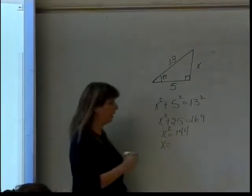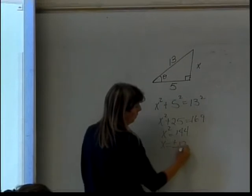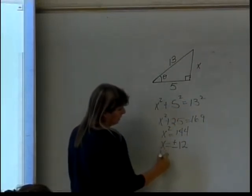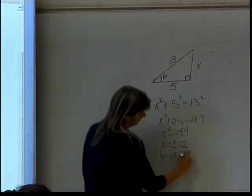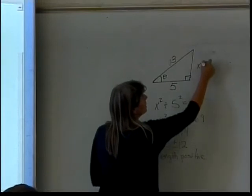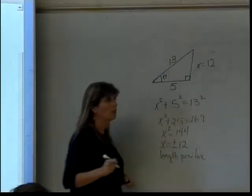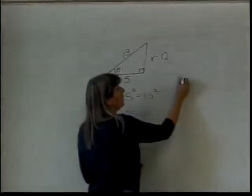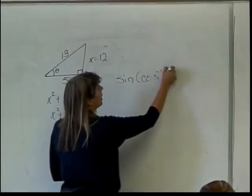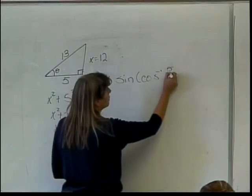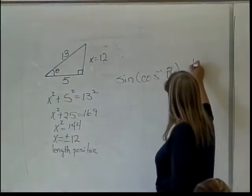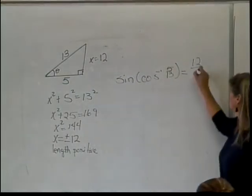So what can you tell me about x? What? It equals plus or minus 12. But since we're dealing with a triangle, what do you know? Length is positive. So this must be 12. So then what will be the sine of the cosine inverse of 5 thirteenths? It will be 12 over what? 12 over 13.